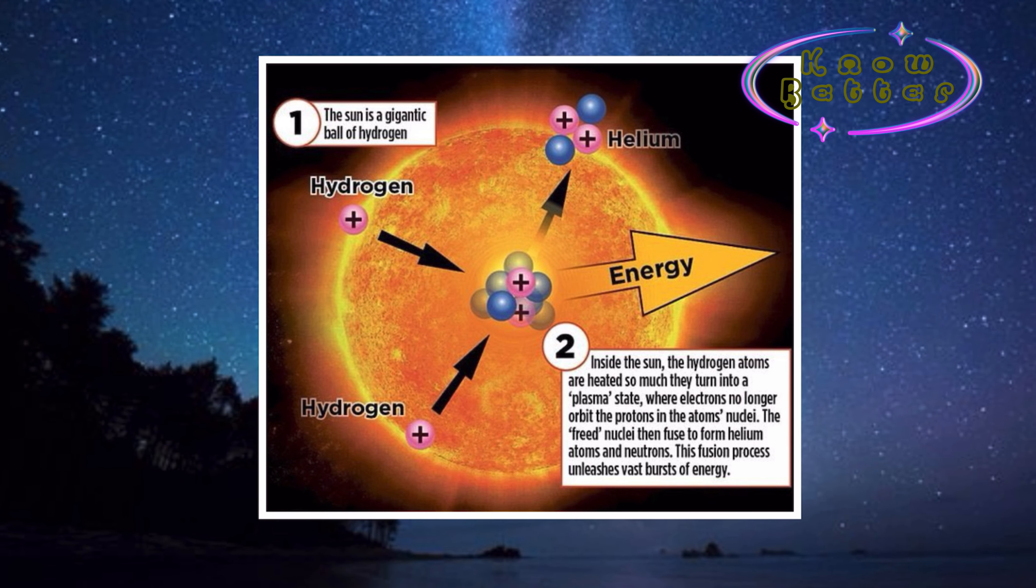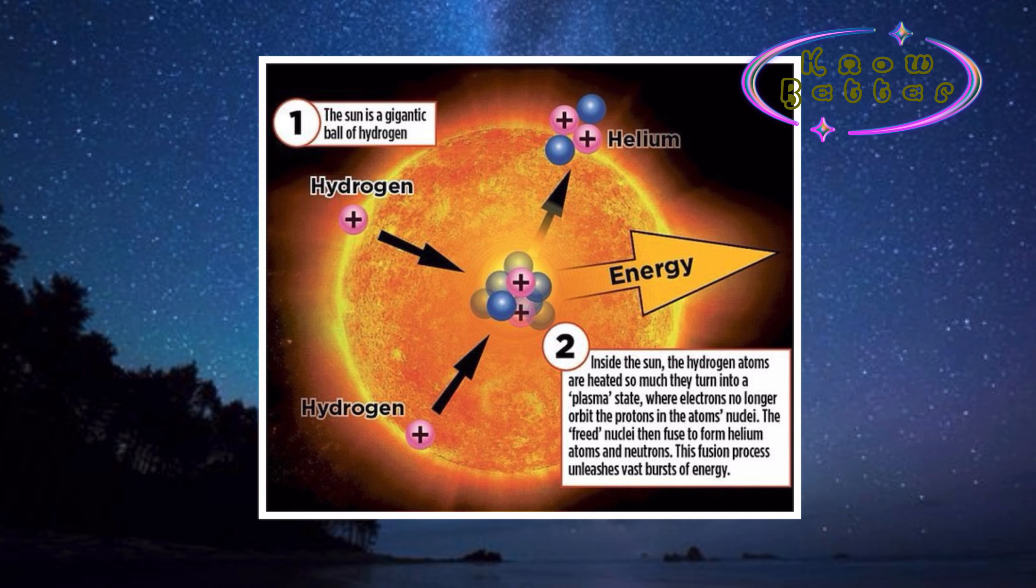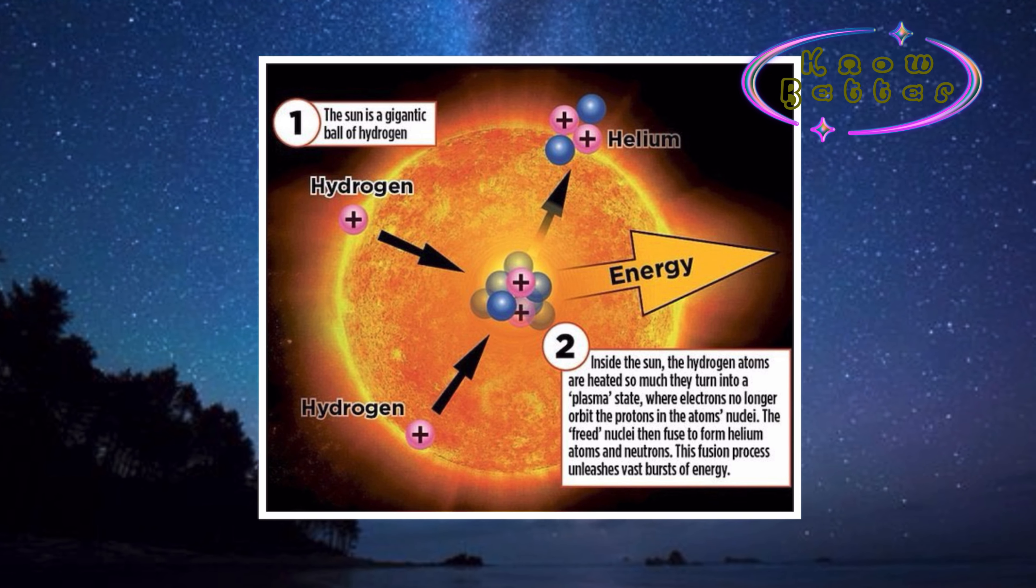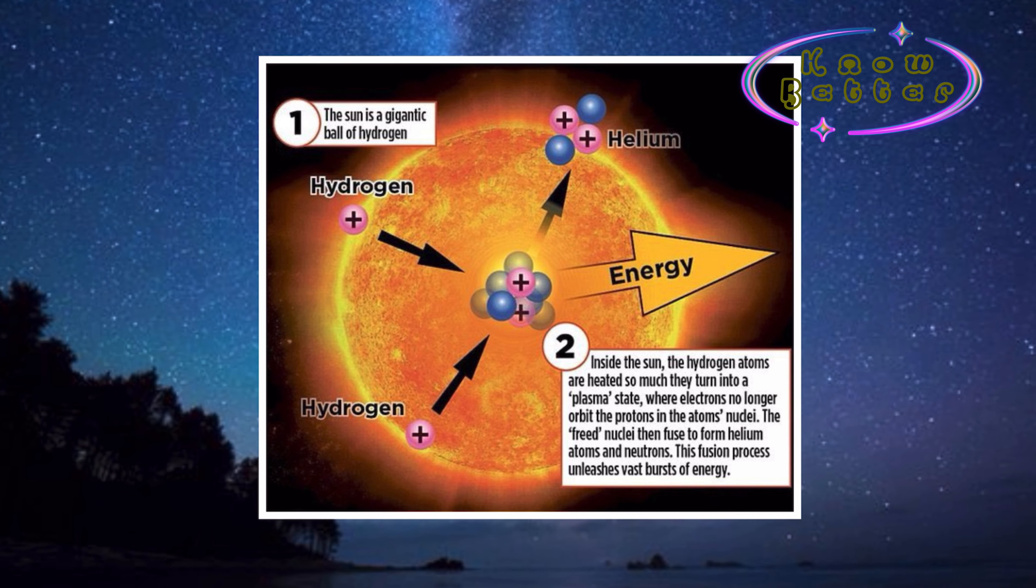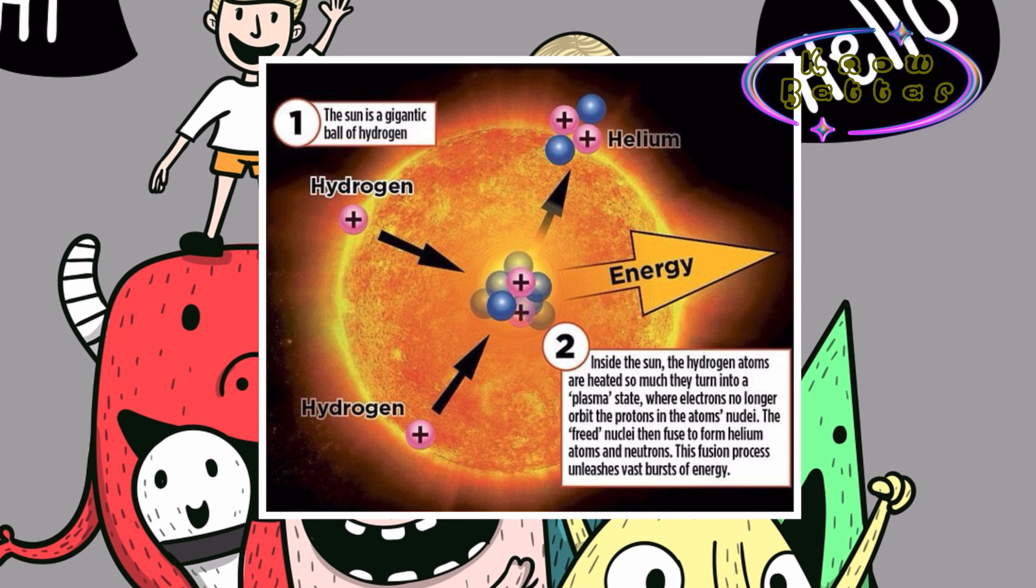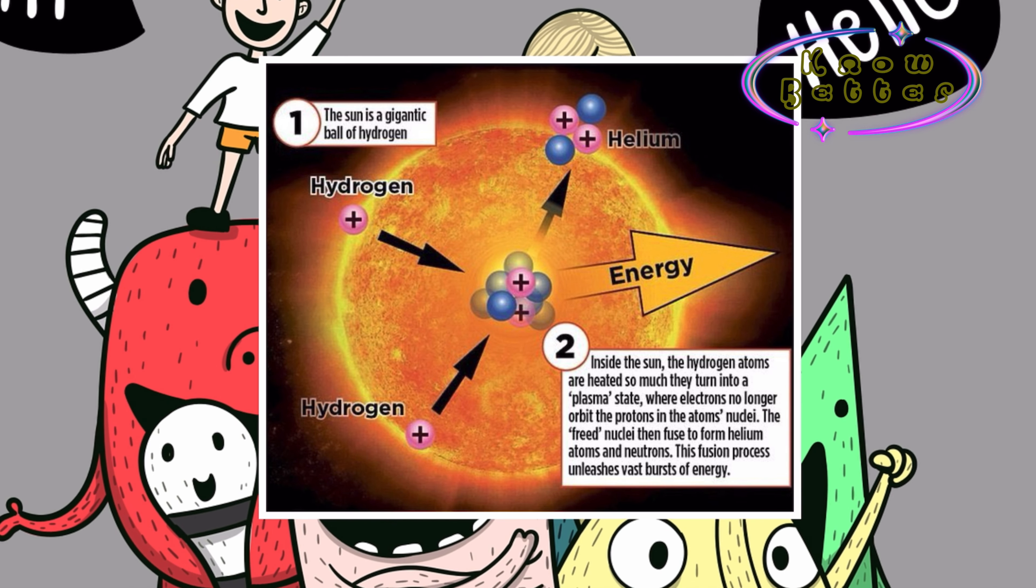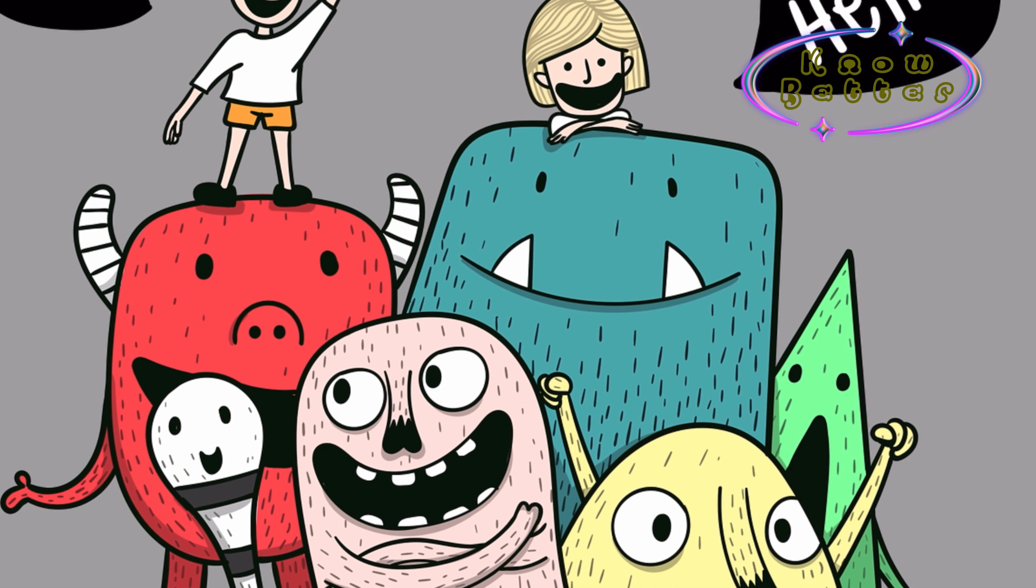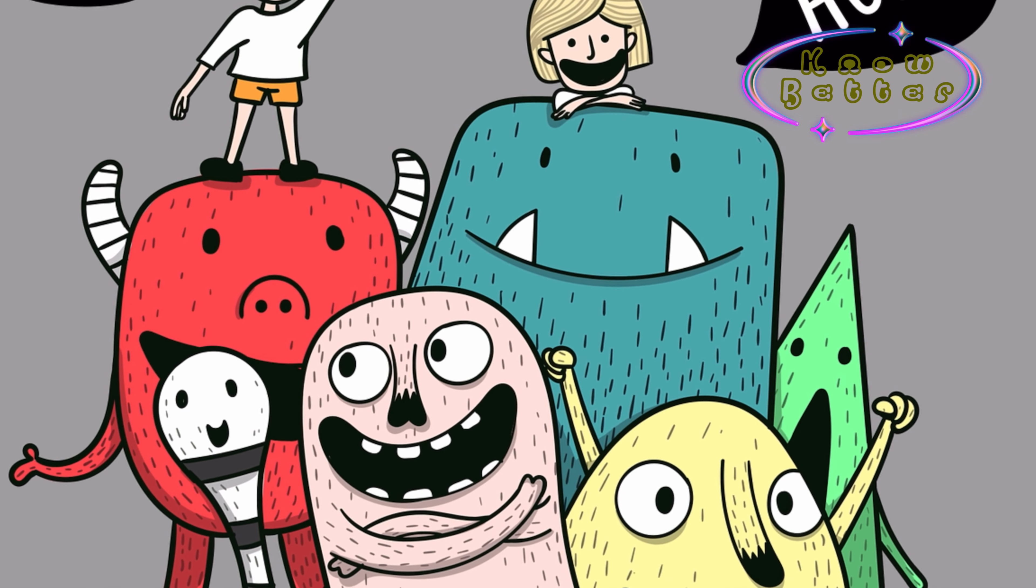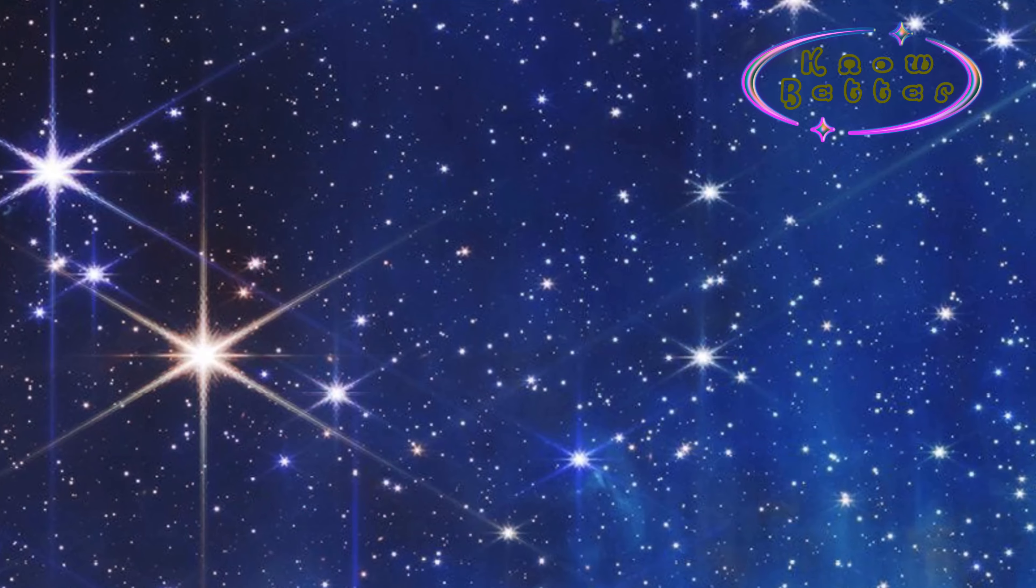Inside the Sun, the hydrogen amount is 71 percent, helium is 26.5 percent, and 2.5 percent is all the other elements.